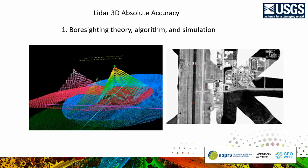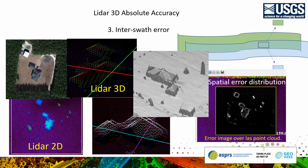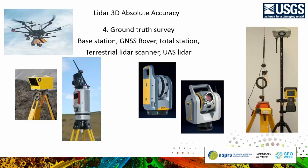In order to address 3D absolute accuracy, we will find the common ground, like bore sighting theory and inter-swath error — which is also called smooth surface precision — and inner-swath error for systematic bore sighting errors.